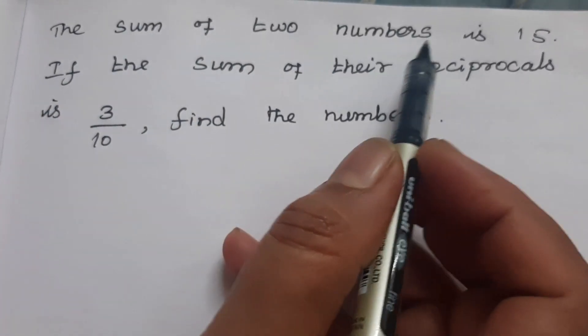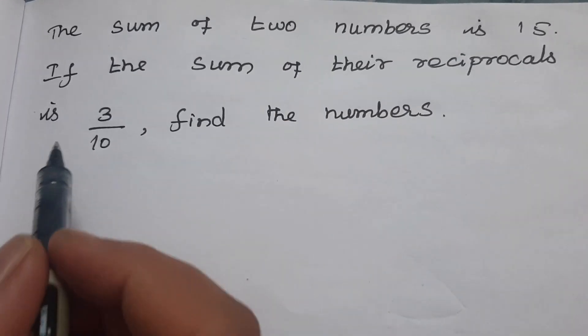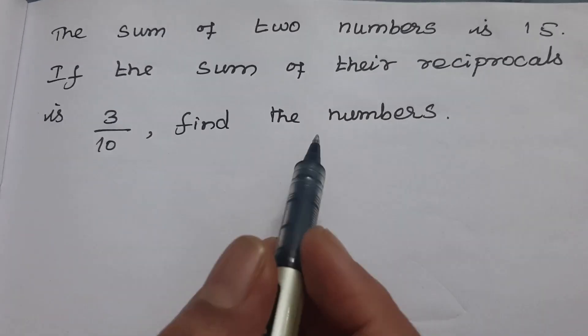The sum of two numbers is 15. If the sum of their reciprocals is 3 by 10, find the numbers.